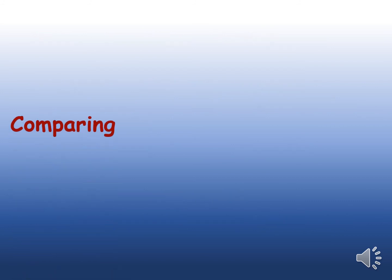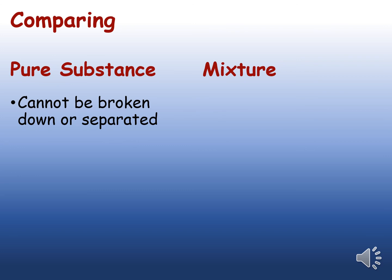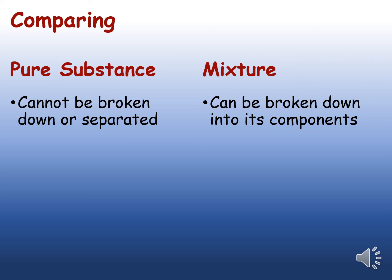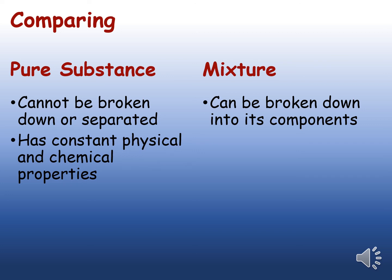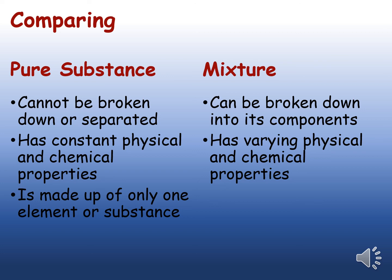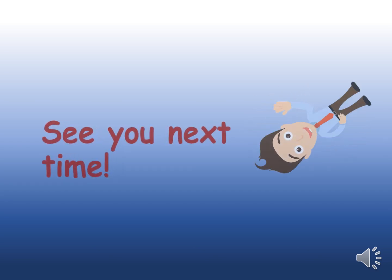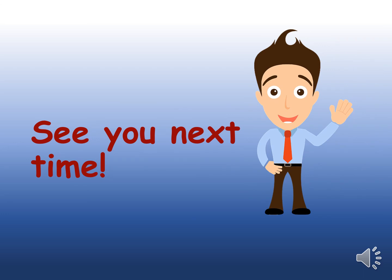To summarize our lesson, let us compare the different characteristics of pure substances and mixtures. Pure substances cannot be broken down or separated, while mixtures can be broken down into their components. Pure substances have constant physical and chemical properties and are made up of only one element or substance, while a mixture is a combination of two or more substances. I hope this lesson gave you a deeper understanding about matter and its different kinds. You can practice what you've learned by identifying and classifying different substances into pure substance or mixture. See you next time.